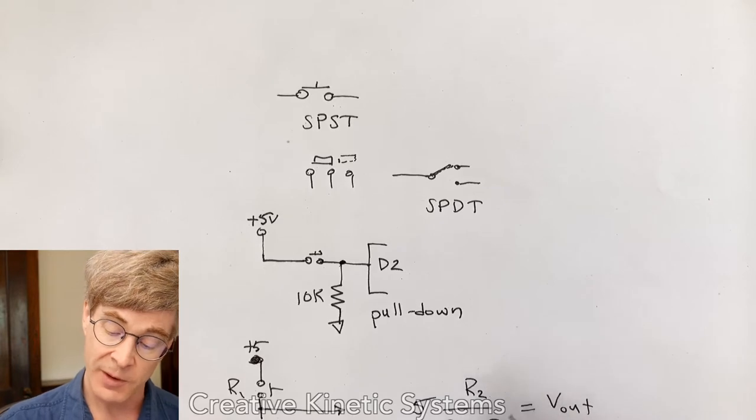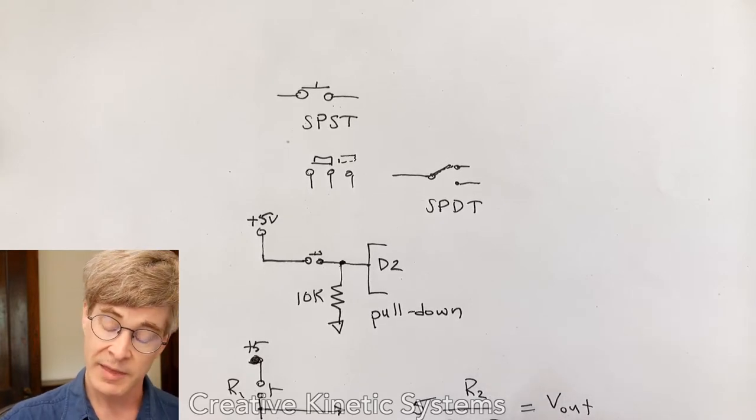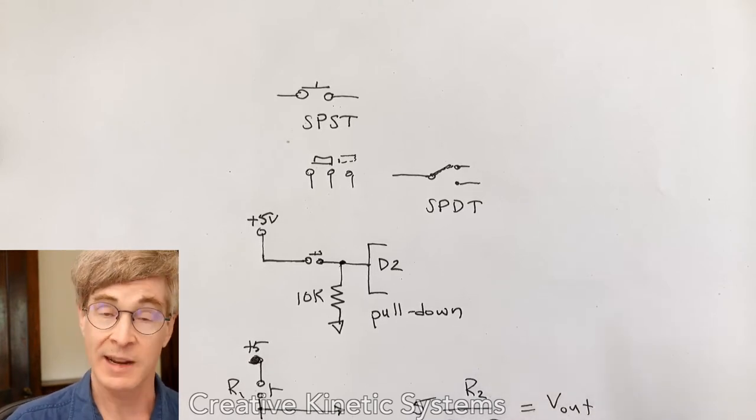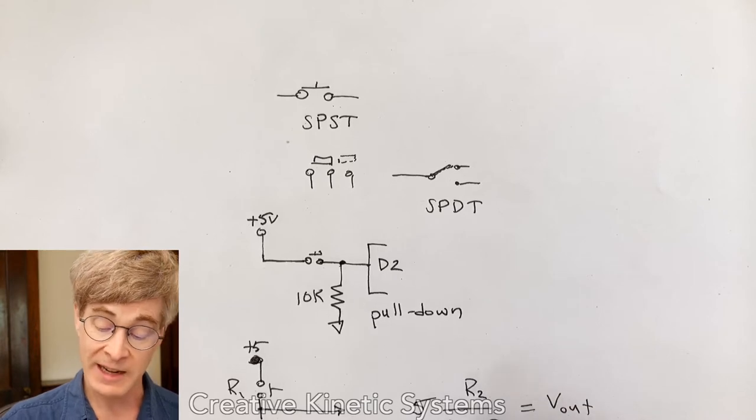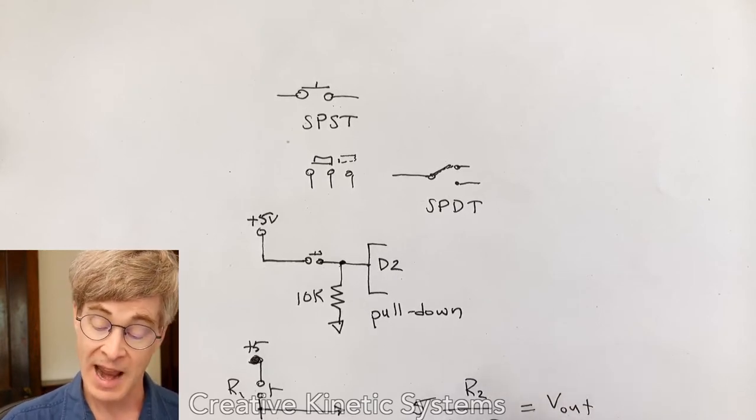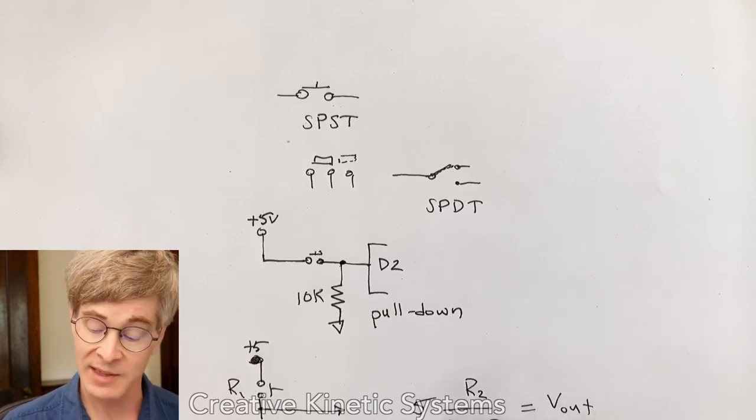And if we just think here, if R1 is zero, then R2 over R2 is simply one. In that case, we are getting the supply voltage of five. When R1 is infinity, then we have this infinite term in the denominator. And so, of course, the fraction approaches zero, and V out will be zero. So we can see the result algebraically.